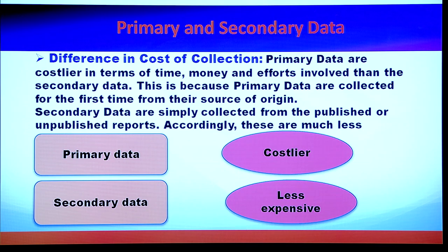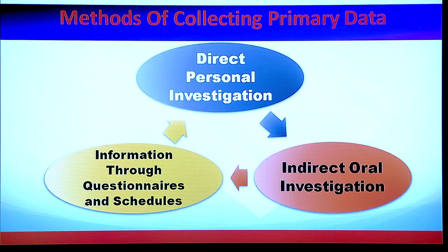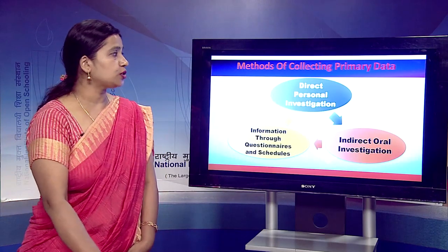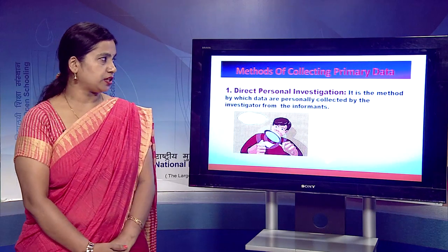Once we know the difference between primary and secondary data, we can discuss the methods by which we can collect primary data. There are three methods: first, direct personal investigation; second, indirect oral investigation; and third, information through questionnaires and schedules.